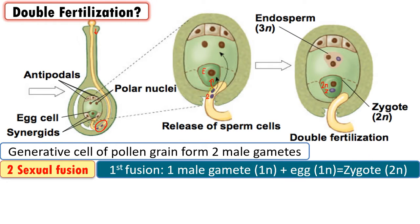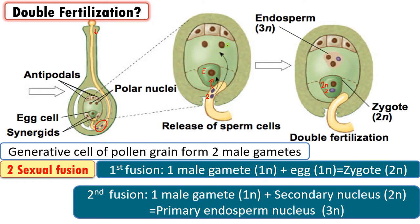The second male gamete fuses with the secondary nucleus. Initially these nuclei are haploid polar nuclei, which combine to form a diploid secondary nucleus. The second male gamete fuses with this secondary nucleus and forms a triploid endosperm nucleus that continuously divides and forms the endosperm, which nourishes the developing embryo.